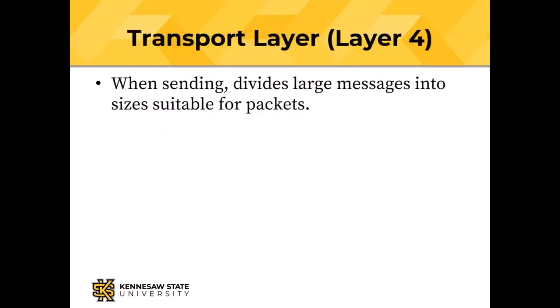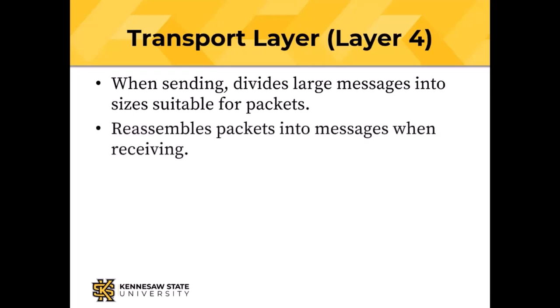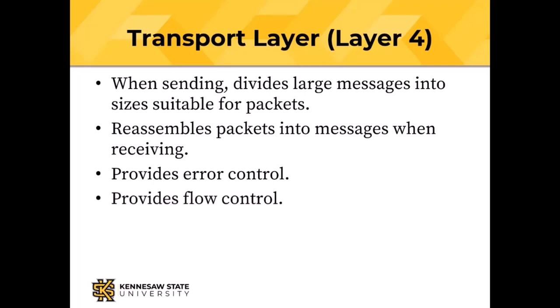The transport layer divides large messages into smaller chunks suitable for packetization — instead of gigabytes of data, you get hundreds-of-byte Ethernet packets. On the receiving end, it reassembles those packets into messages. It provides error control with error checking, and flow control — when one node sends faster than the other can receive, the receiving station sends a flow control message saying 'hold up, let me catch up.'